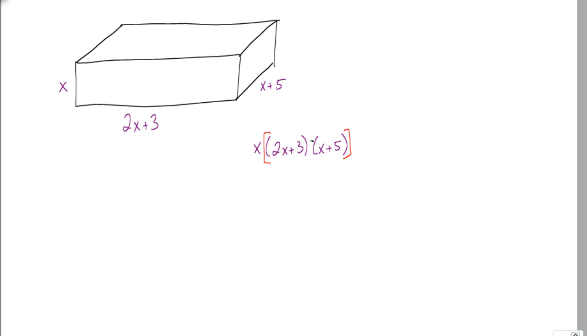So, using the extended distributive property, also known as the FOIL method, we're going to take 2x times x and 2x times 5. When I do that, 2x times x gives me 2x squared and 2x times 5 gives me 10x.